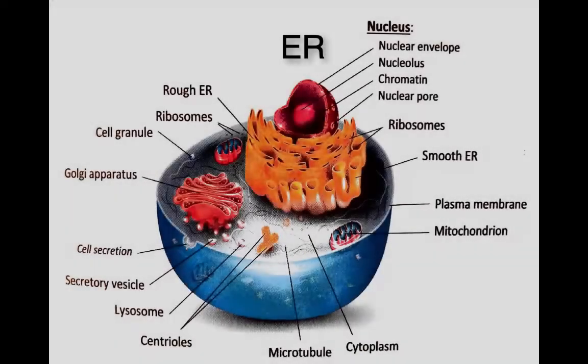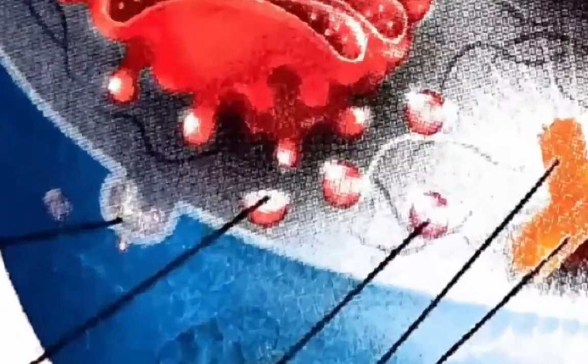This leads us to our final organelle: membrane-bound vesicles. These can be purely used for storage, as we see in plants with their large central water vacuole. They may also hold digestive enzymes that will fuse with other nutrient-containing vesicles to help break down nutrients, or they may hold chemicals to be used later, such as neurotransmitters.